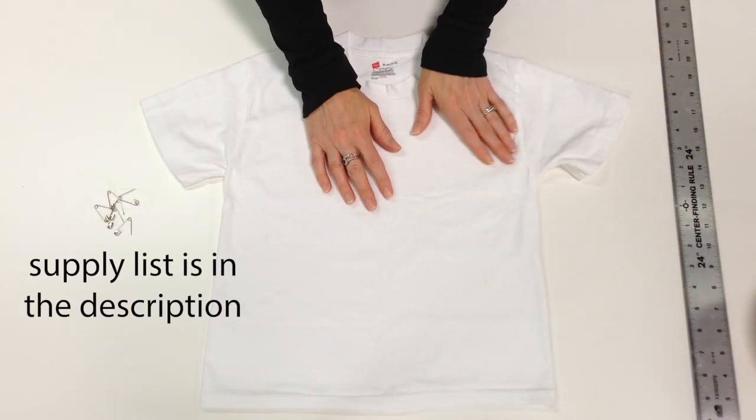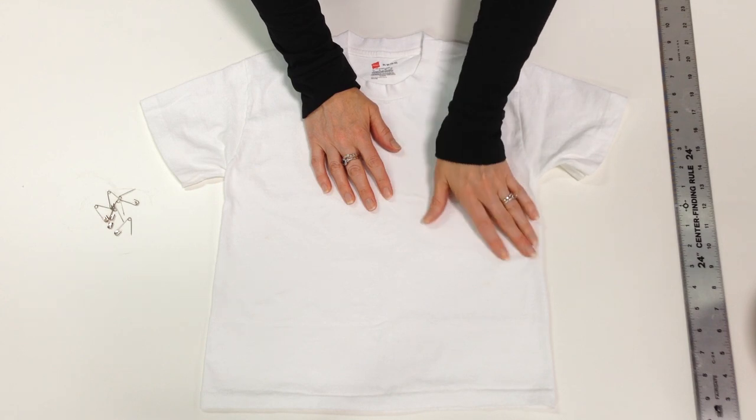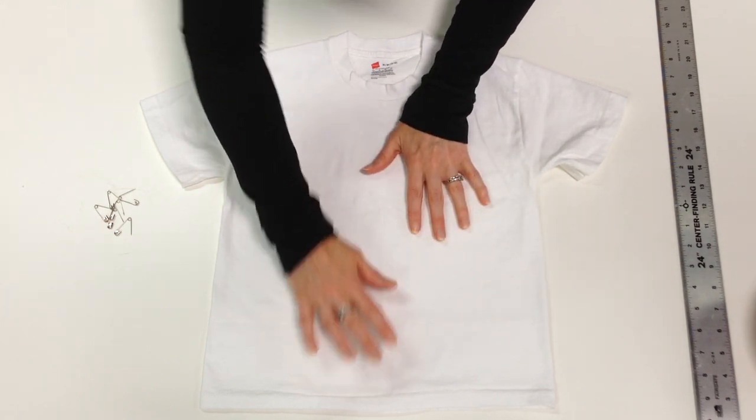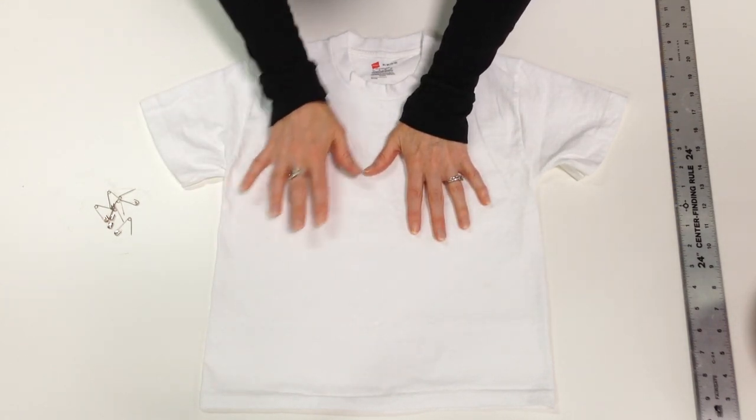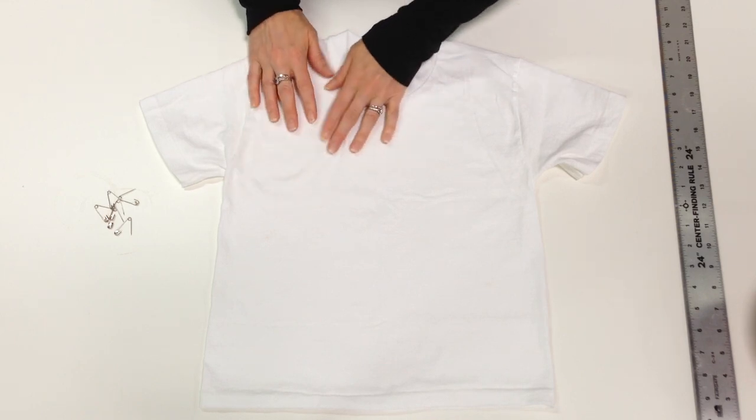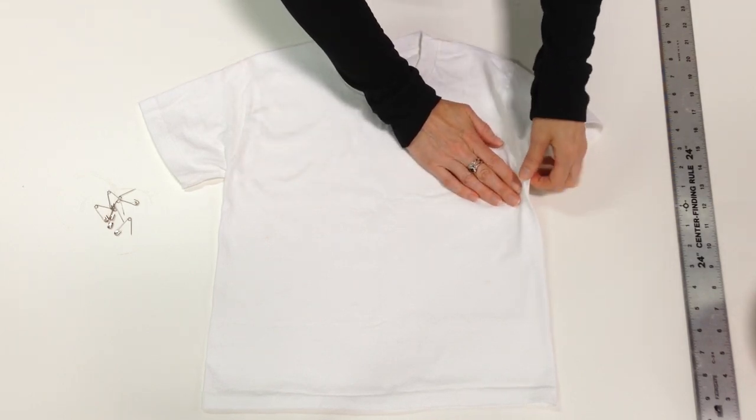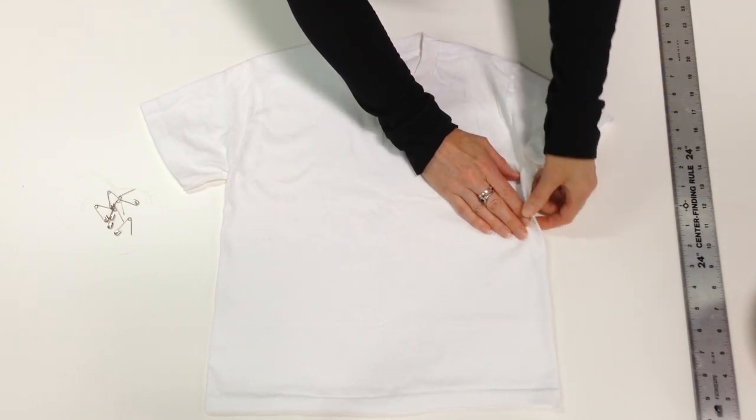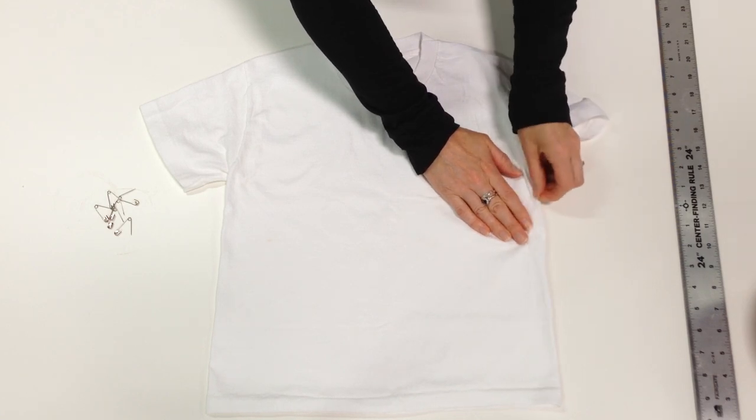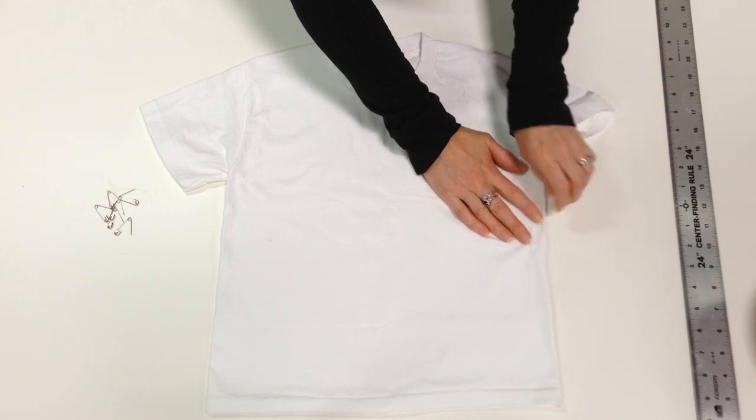I'm starting with a clean, white, 100% cotton t-shirt that I have washed and dried without the use of any fabric softener. I'm getting it smoothed out here on my surface because I want to do a little measuring before I get started.